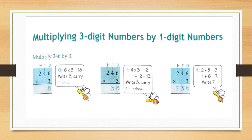Now children let us understand this with an example. Look at the example children — multiply two hundred and forty six by three. First we will multiply the ones by three — that is six into three is eighteen. So write eight under ones and carry one ten.